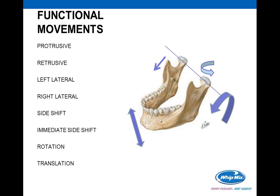There are functional movements of the jaw: protrusive, where the jaw comes forward; retrusive, where it moves backward; left lateral and right lateral movement; immediate side shift; rotation, which is a turning movement the condyle makes in the fossa; and translation, which is the movement as the condyle moves forward and down along the upper portion of the fossa. So there's a lot of functional movement going on, not just open and closed.